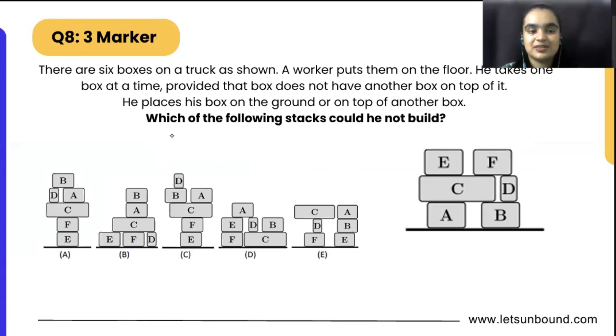There are six boxes on a truck as shown. A worker puts them down on the floor. He takes one box at a time, provided that box does not have another box on top of it. He places his box on the ground or on top of another box.